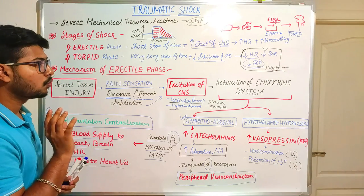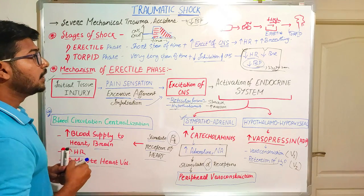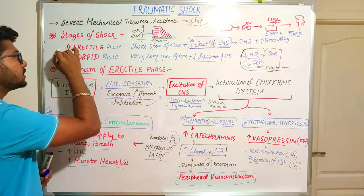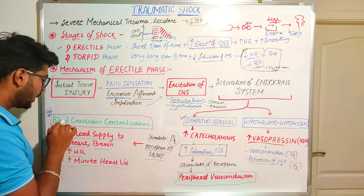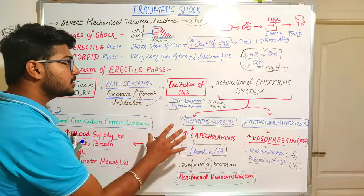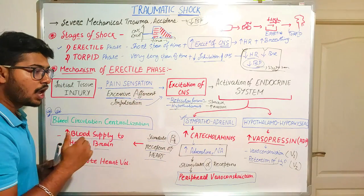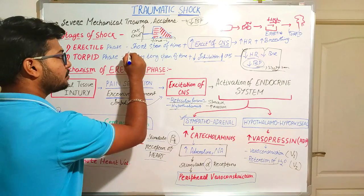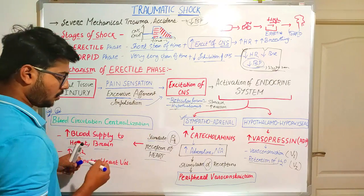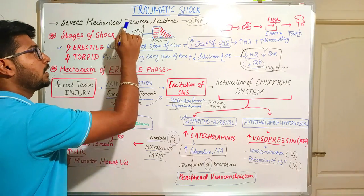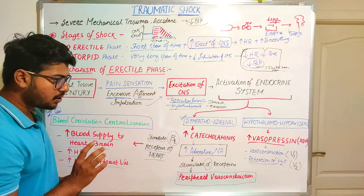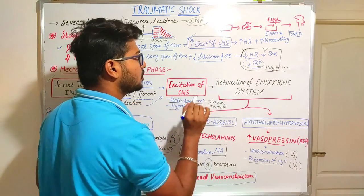An important exam question is: which phase of traumatic shock leads to excitation of the central nervous system? Answer: the erectile phase. In which phase is blood circulation centralization seen? The answer is also the erectile phase. This phase occurs for a very short span of time as a compensatory mechanism in response to loss of body fluids during mechanical trauma or accident.